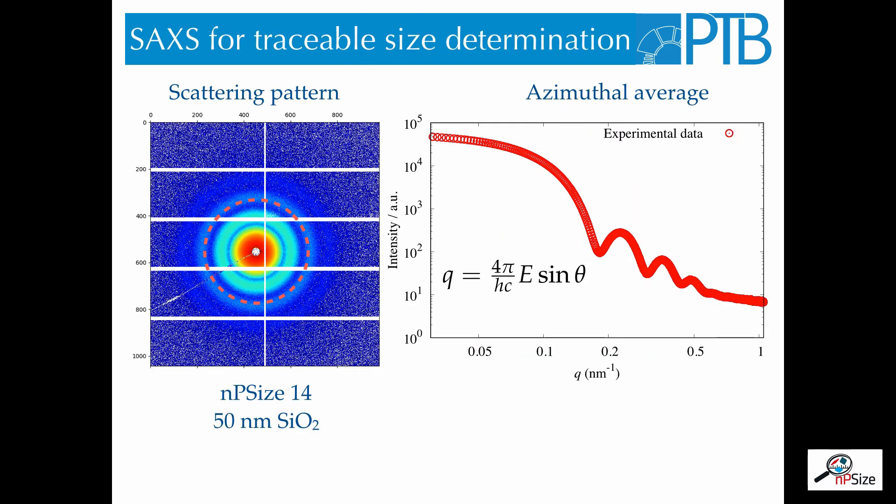On the left side, you see the scattering pattern that was collected from the NP-SIZE 14 material. This is a dispersion of 50 nm silica particles in water. The scattering pattern is circularly symmetric and after we collect the pattern, we average it over concentric circles to end up with a scattering curve, which you see on the right. The scattering curve displays the intensity of the scattered radiation as a function of q, which is the magnitude of the scattering vector and it is proportional to the sine of the scattering angle.